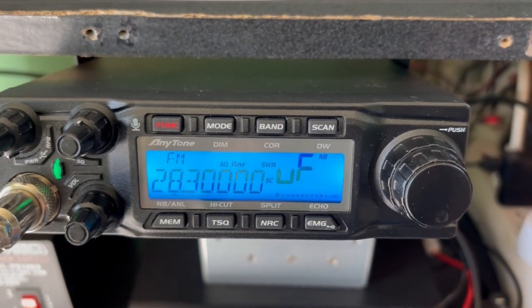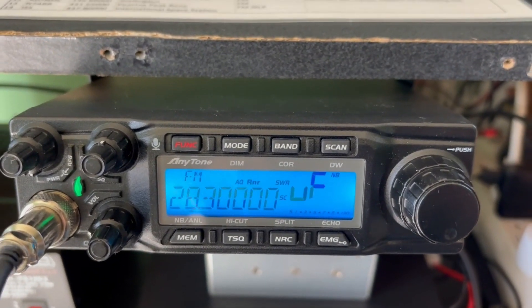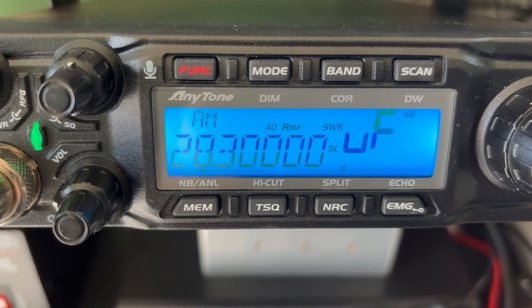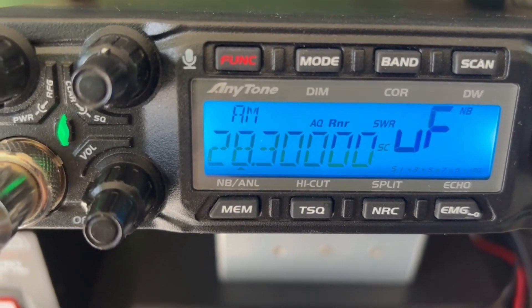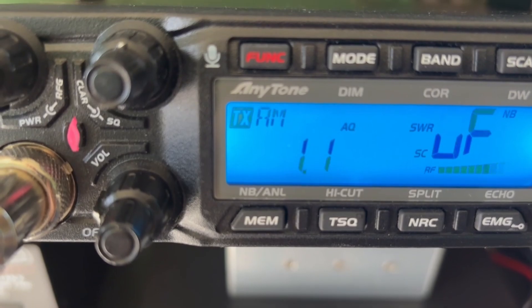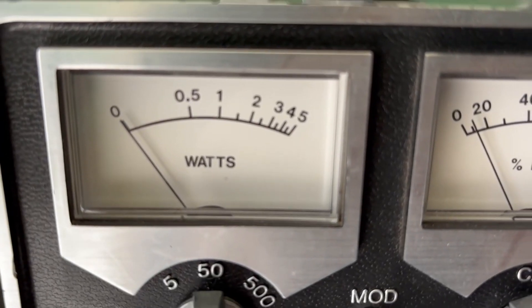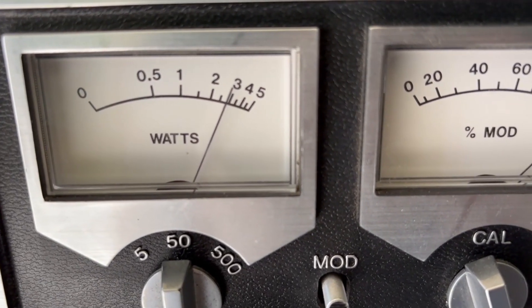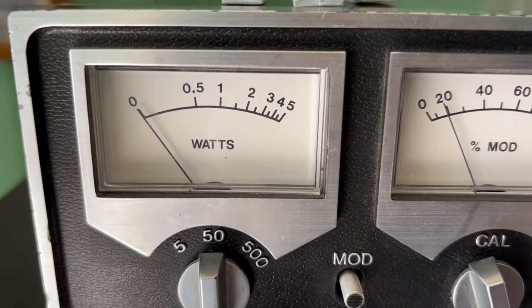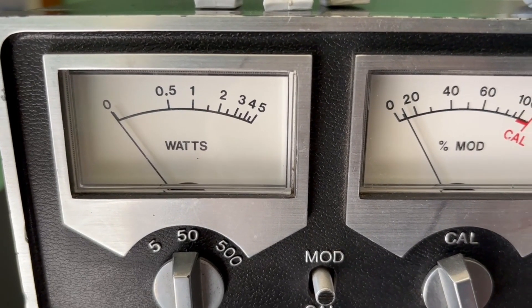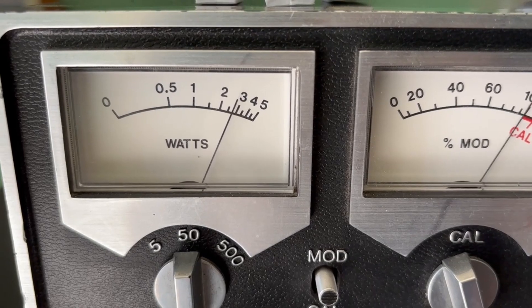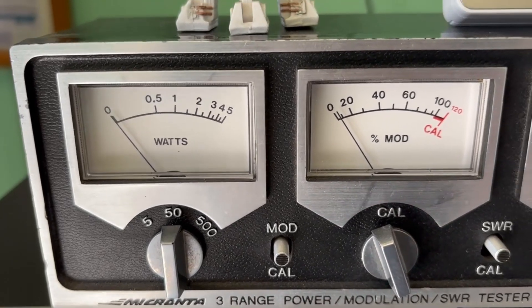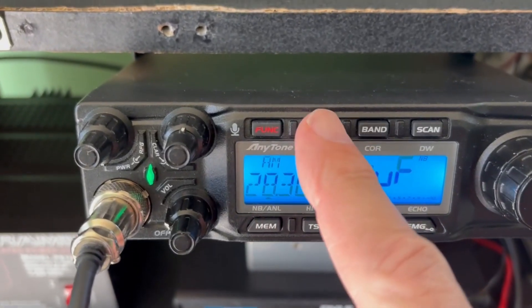All right so again we got 50 watts on FM. All right let's put it on AM. And let's go ahead, our SWR is 1.1, let's see what our watts are. This really doesn't show any swing in the watts on AM, but we're getting around pretty close to 30 watts which is where the specs show it should be.